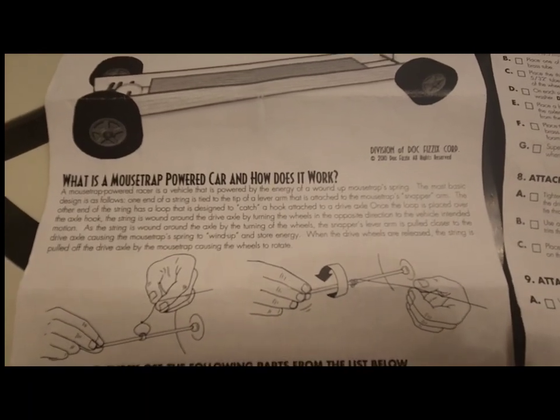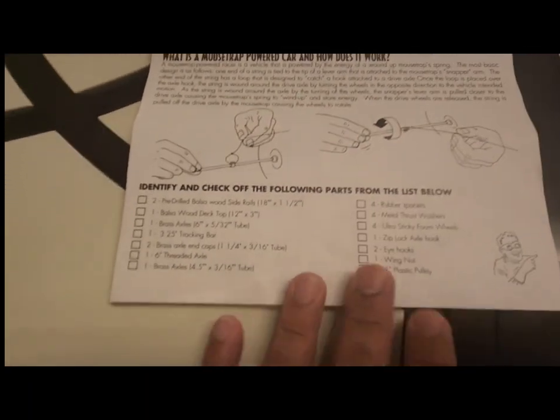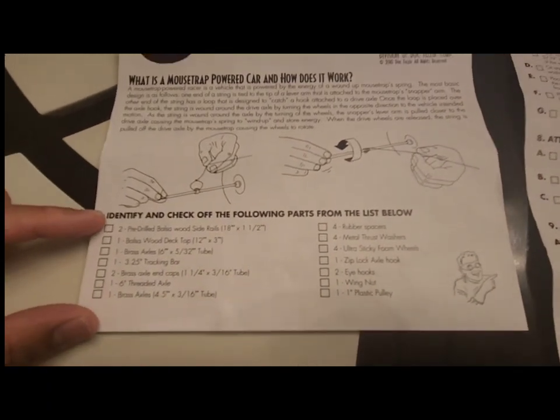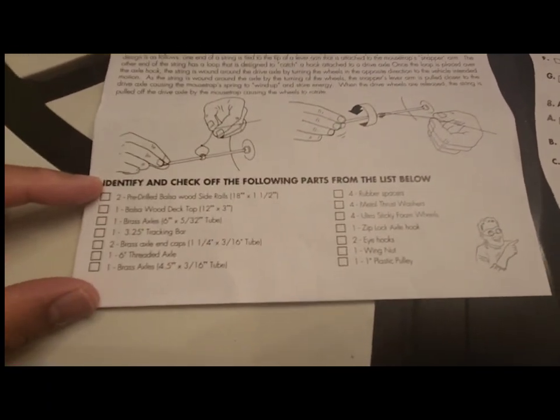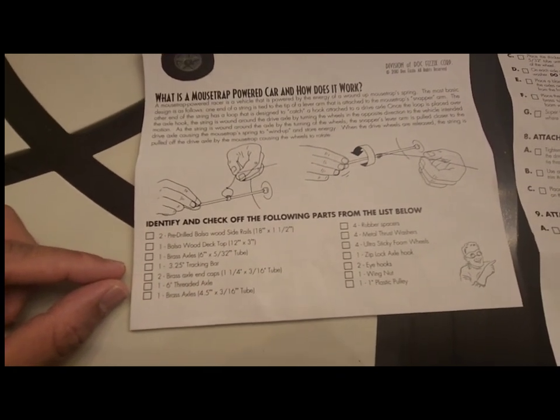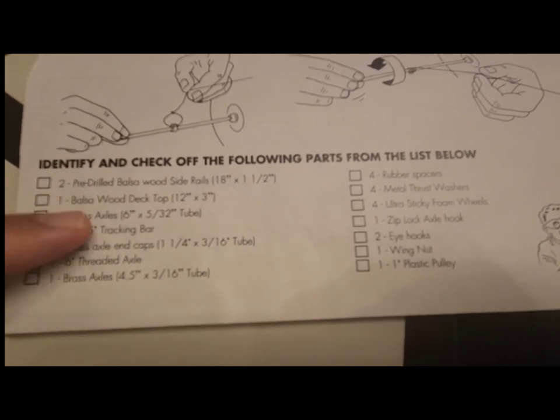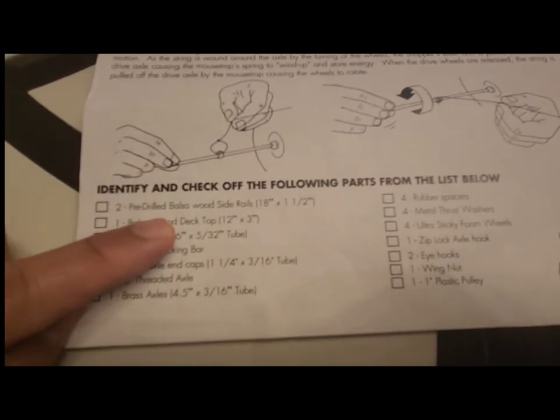These are the little things that come along with the kit. Identify and check off the following parts from the list below. There are two pre-drilled balsa wood side rails, 18 inches by one and a half inches.